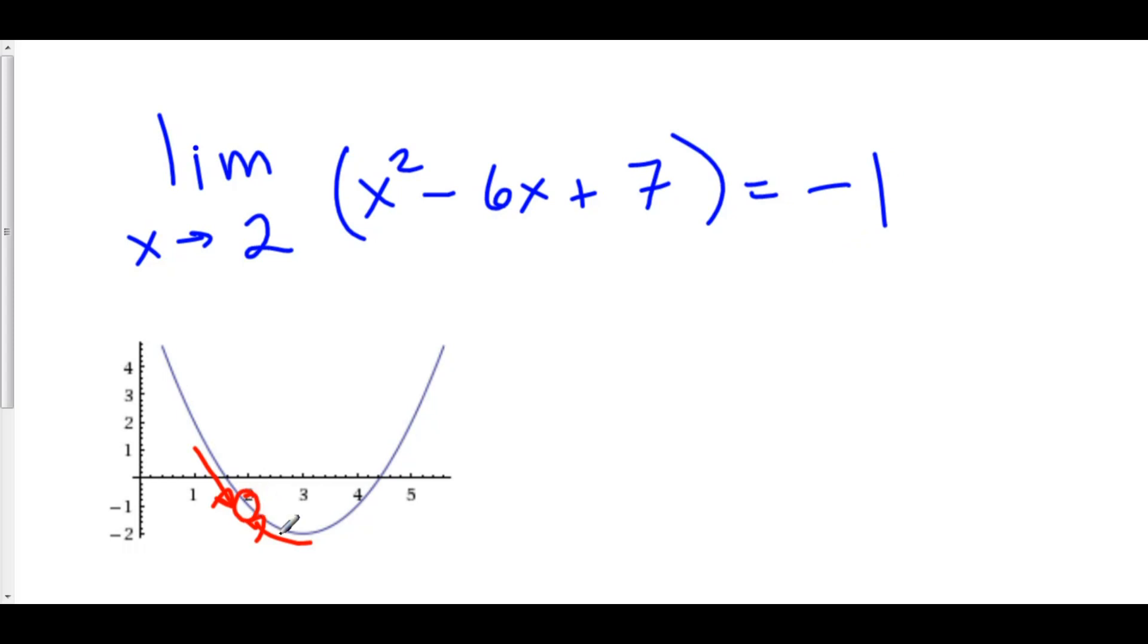Plus 7 is negative 1. And so, lo and behold, the limit is approaching negative 1 in the graph, and when you plug it in, you get negative 1. The reason is because this is continuous here, and we'll talk about that a bit later.